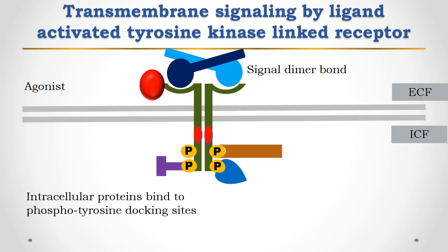Due to tyrosine phosphorylation of these proteins, the intracellular proteins bind to the phosphotyrosine docking sites and are activated. Their function is altered, which results in a series of events culminating in responses like mediating actions of a variety of growth factors, peptide mediators, and insulin. These phosphorylated tyrosine docking site proteins are responsible for producing a cascade of events that results in cellular responses.